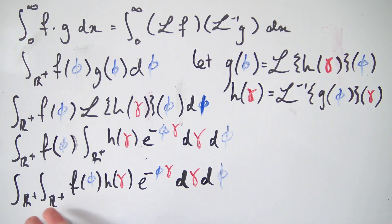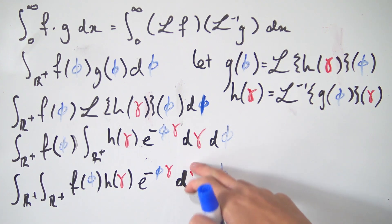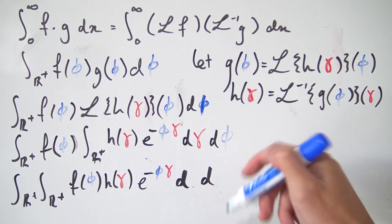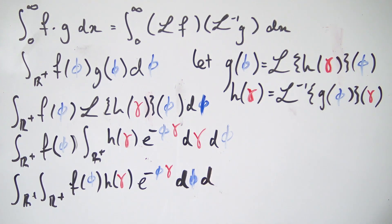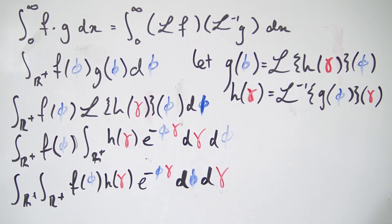Now I'm going to interchange these two integrals. You'd need to verify that everything converges nicely using Fubini's theorem, but I'm not going to go through that in this video. We just interchange them — since the bounds are the same, we simply swap the order of integration to dφ first and then dγ.